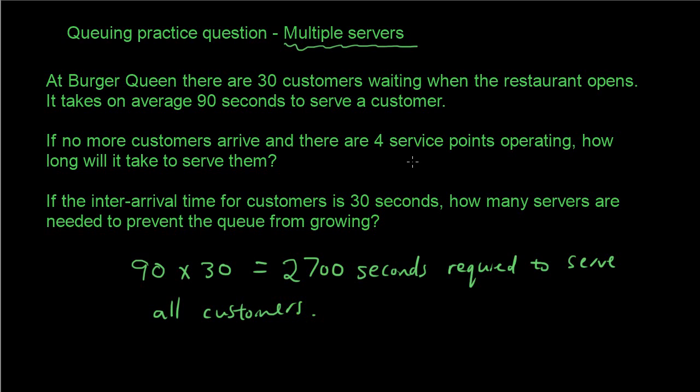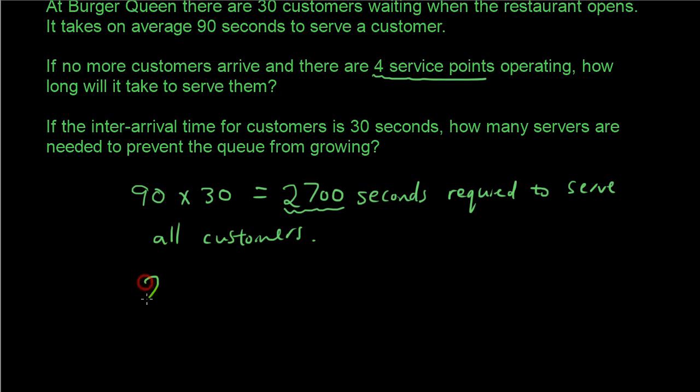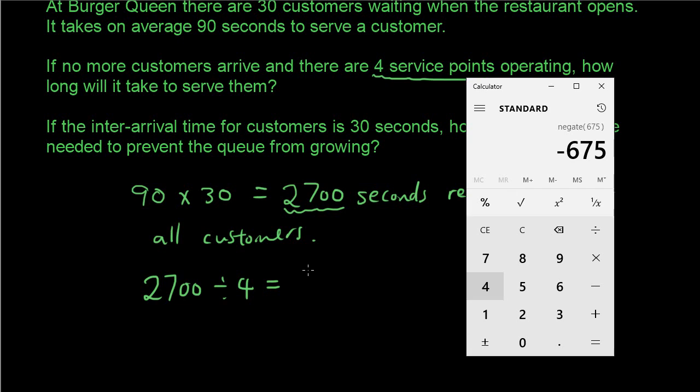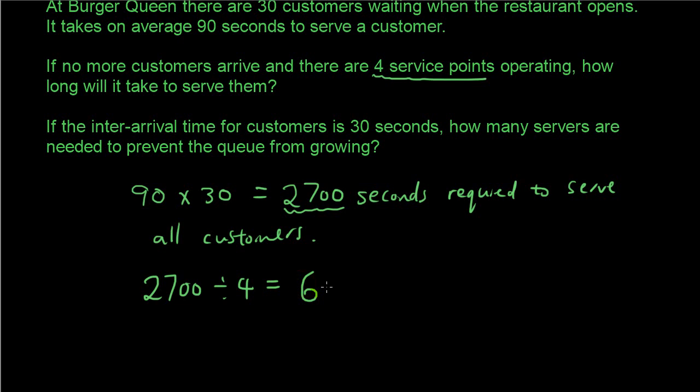so 90 times 30 is 2,700 seconds required to serve all customers. Now, here is the cool thing. Because this 2,700 seconds is required if there is only one service point, but because there are 4 service points, we can actually divide this number by 4. So 2,700 divided by 4, and the answer is 675 seconds.